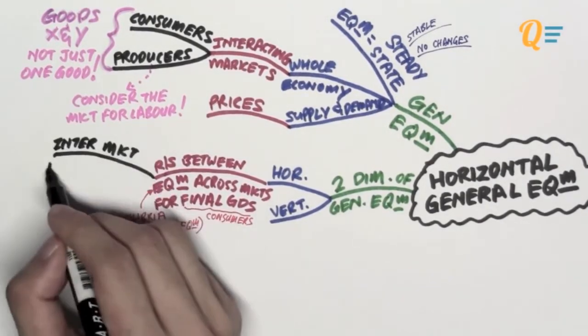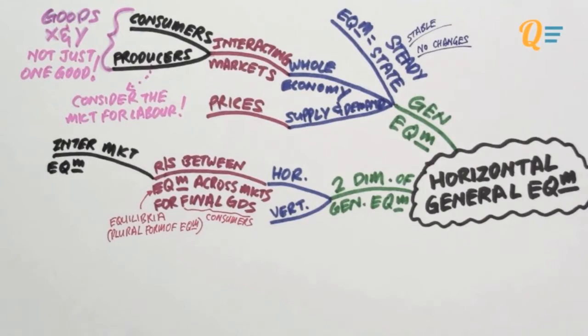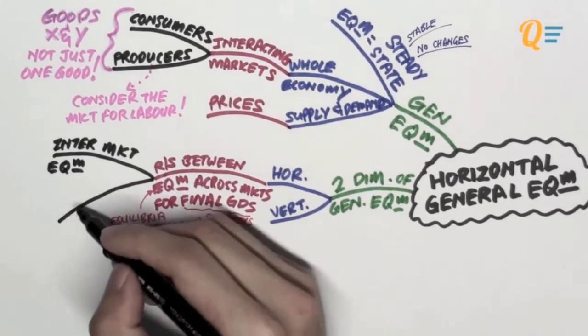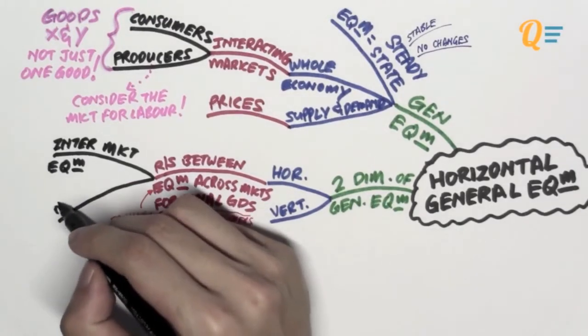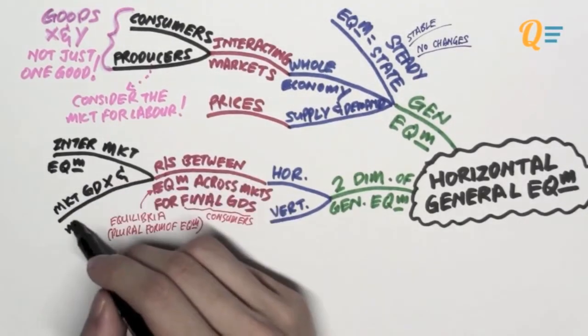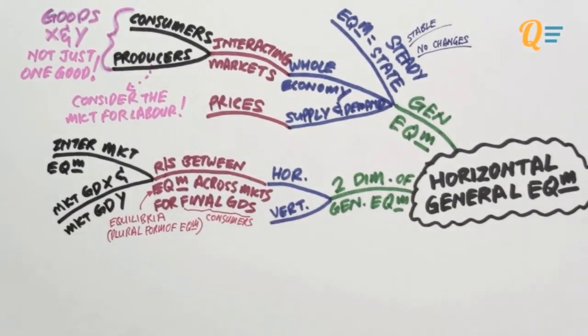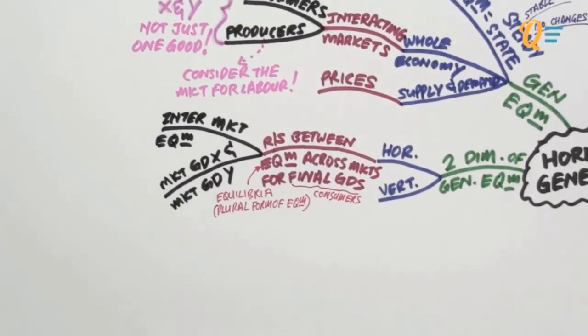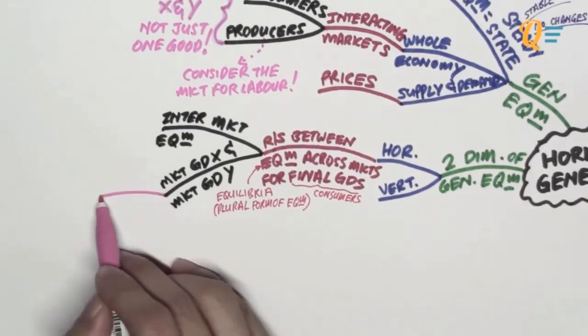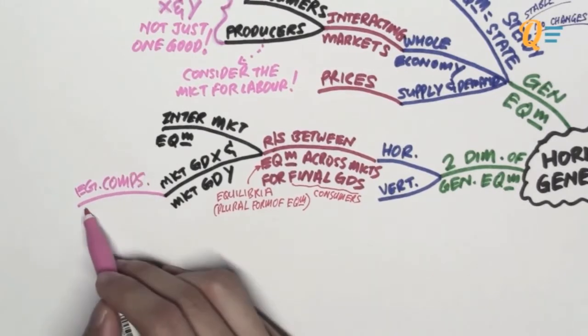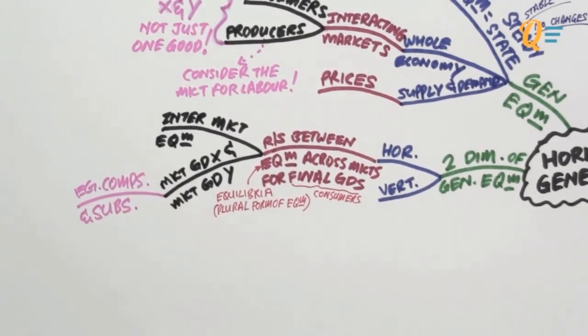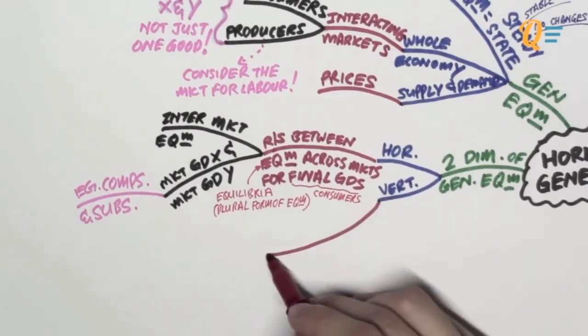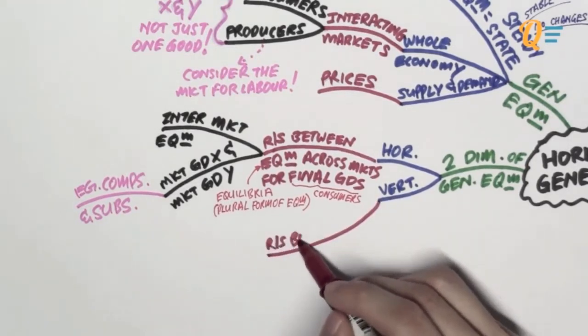Horizontal general equilibrium is also known as inter-market equilibrium. Inter-market here, we're talking about the final goods. We're talking about the market for good X and maybe a market for good Y. Let's just keep it to two markets for two different goods so that things will be easier. Good X and good Y, their markets might be interrelated because maybe they are complements or they might be substitutes. The demand for good X would affect the demand for good Y if they are either complements or substitutes.